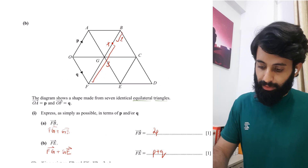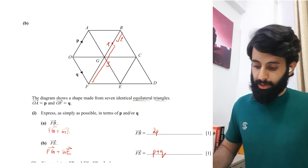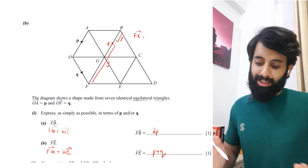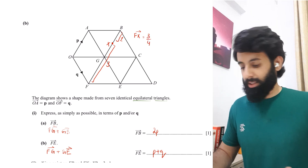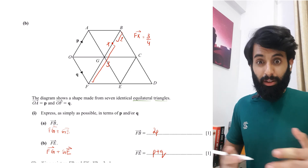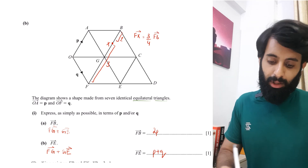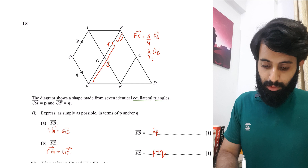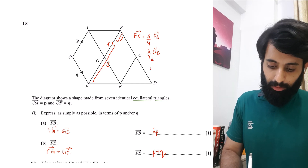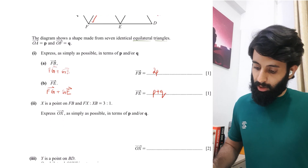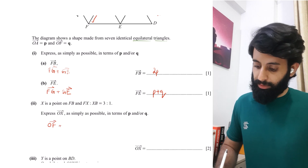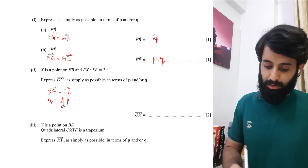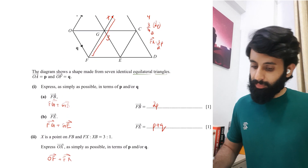The question asks us to express OX in terms of P and/or Q. We go from O to F and then from F to X. O to F is Q. FX is 3/4 of FB — because the ratio is 3 to 1, the total is 4 parts, and FX is 3/4 of the total. FB is 2P, so FX = 3/4 × 2P = 3/2 P. Therefore OX = Q + 3/2 P, which we write as 3/2 P + Q.